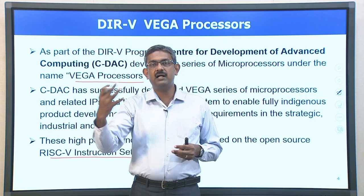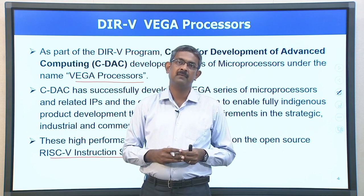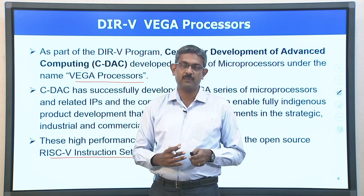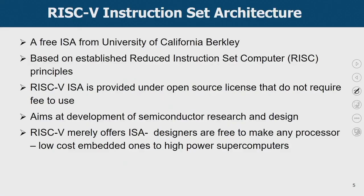In our course, we have already learned about the RISC-V pipeline — the basic 5-stage pipeline — and its extension, which is the RISC-V ISA, that is going to be the heart of the Vega microprocessors. RISC-V instruction set architecture is a free ISA from the University of California, Berkeley. It is based on established RISC principles — reduced instruction set computer, the load-store architecture which we already learned. RISC-V ISA is provided under an open-source license so that no fee is required to use it. It also aims at enabling semiconductor research and design, and designers are free to make any processor, from low-cost embedded ones to high-end supercomputers, using this RISC-V ISA.